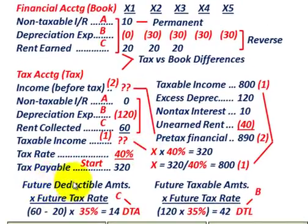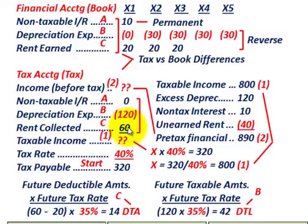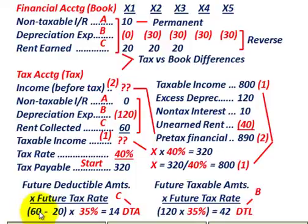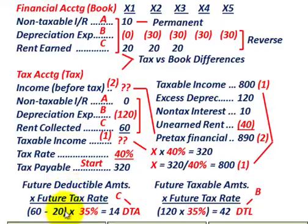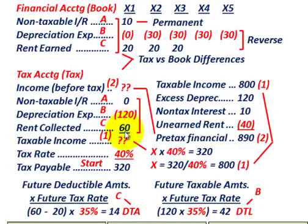Now let's calculate our deferred tax asset. That comes from the $60,000 in rent collected — it's like a prepaid tax on that rent for tax accounting purposes, but we only recognized $20,000 for financial accounting. So the future deductible amount is $60,000 less $20,000, which equals $40,000. Taking that future deductible amount of $40,000 times the future tax rate of 35% gives us a deferred tax asset of $14,000.